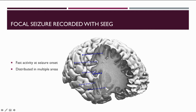Stereo-electroencephalography, or SEEG, consists in implanting depth electrodes in the cortical network where the seizures are generated. But we need to define reliable electrical biomarkers of the epileptogenic zone from the SEEG recordings in order to know which regions must be resected, and these regions must be tailored according to these biomarkers.